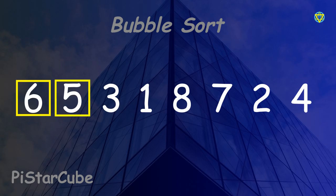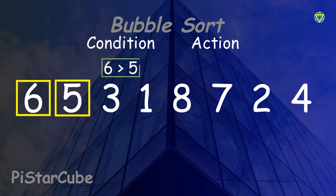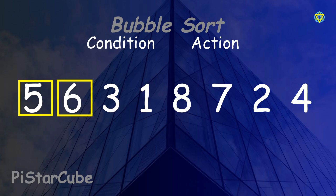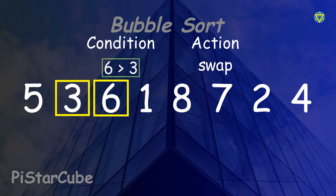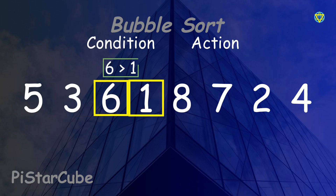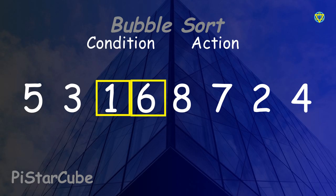Now let's actually see it in action with an example. We have this array. First, we compare 6 and 5 — 6 is greater than 5, so we swap those elements. Next, it moves on to the next adjacent elements, 6 and 3 — 6 is greater than 3, condition matches, we swap those elements. It does the same thing with 6 and 1 — 6 is greater than 1, condition matches, it swaps those elements.